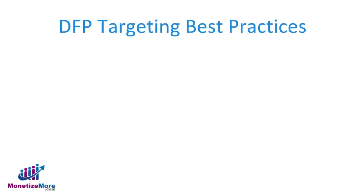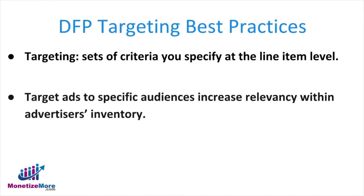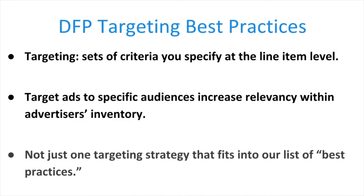Number 2: next up on our list of best practices is incorporating DFP's targeting functionality. Targeting is defined sets of criteria that you manually specify at the line item level. When you target ads to specific audiences, you increase relevancy within advertisers' inventory. The great thing about targeting is that you can incorporate a combination of key values into your line items to get laser-focused ad unit and placement profiles. Let's go into more detail, starting with geotargeting.